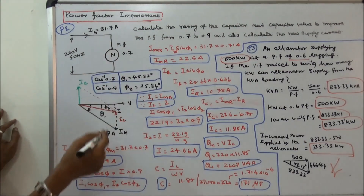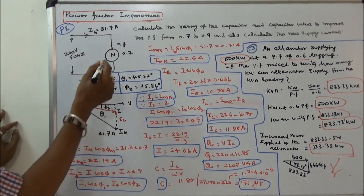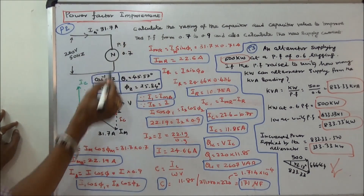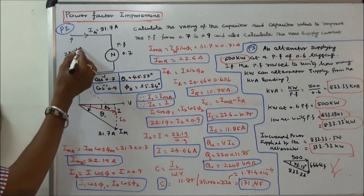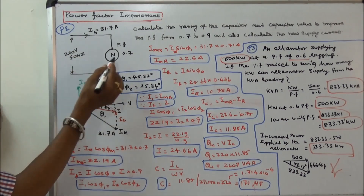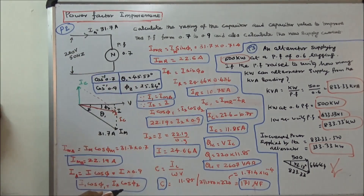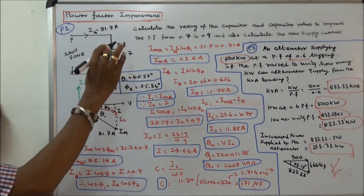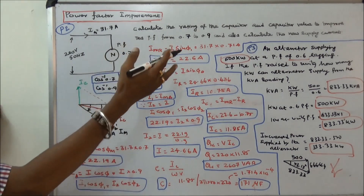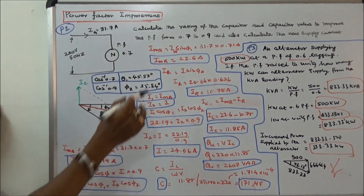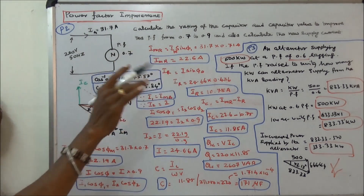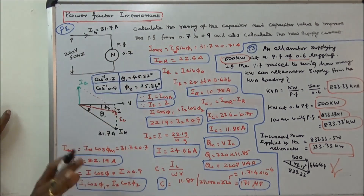The second problem: an induction motor draws a current of 31.7 amps. Supply voltage is 220V, frequency is 50 Hz, power factor is 0.7. The question is: calculate the rating of the capacitor and capacitor value to improve the power factor from 0.7 to 0.9, and also calculate the new supply current.